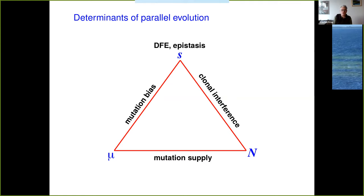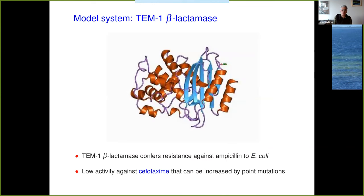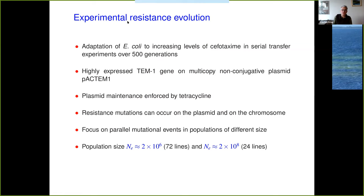The model system we have been working on for a number of years is a well-known antibiotic resistance enzyme, TEM-1 beta-lactamase, which originally arose as a resistance enzyme against ampicillin. Our studies and many other studies look at how this enzyme can adapt to novel antibiotics — in particular, how it can raise its low activity against cefotaxime by mutations. We have spent a lot of time characterizing these mutations, determining their properties and interactions. The experiment I want to describe had a somewhat broader scope: how do populations evolve resistance against cefotaxime in a more open-ended way?